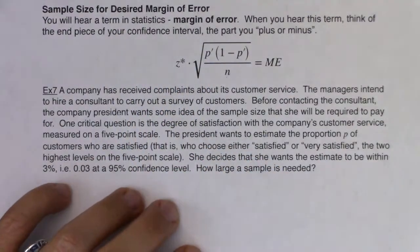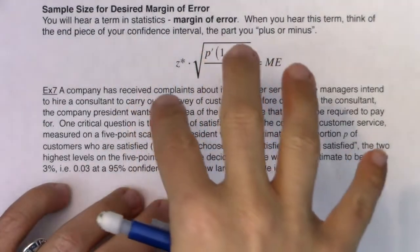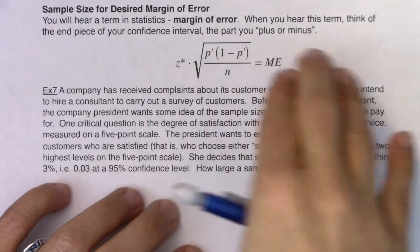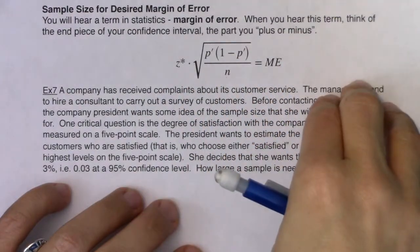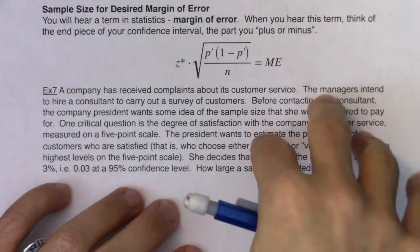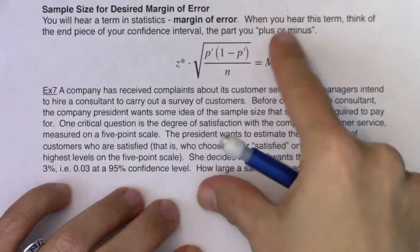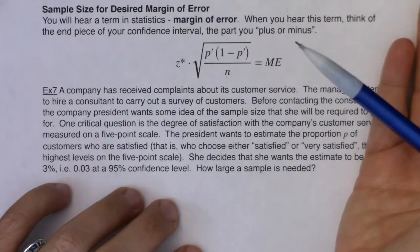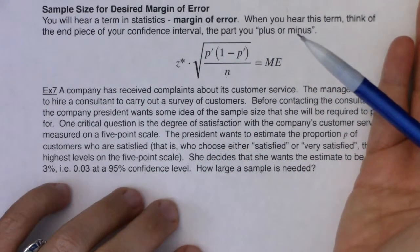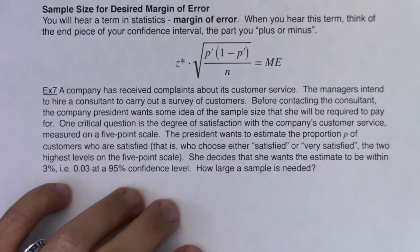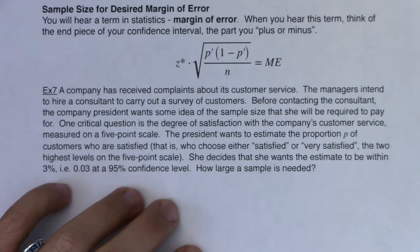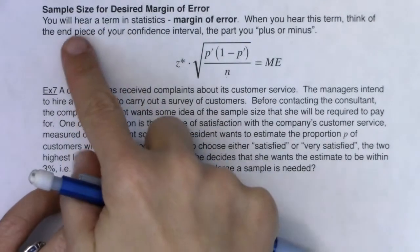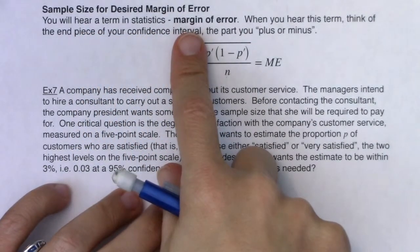If you remember that phrase from chapter seven — as sample size increases, variability decreases — it's the same deal here. As sample size increases, your margin of error decreases. So you'll need to survey more people, or have more animals in your experiment, or widgets, whatever you're trying to deal with. You'll hear this term in statistics called margin of error.